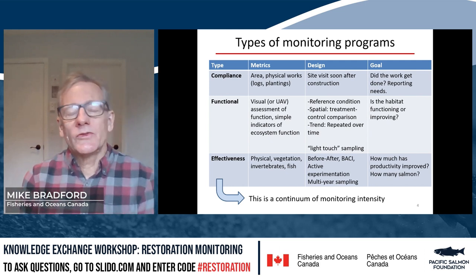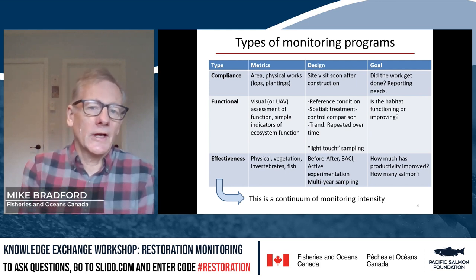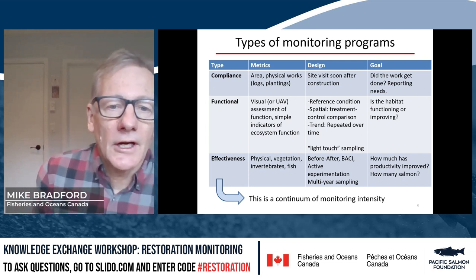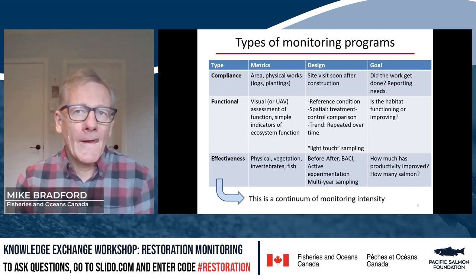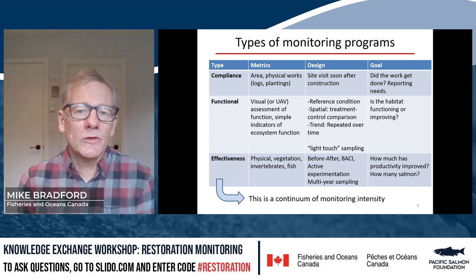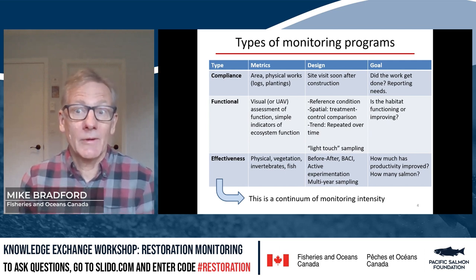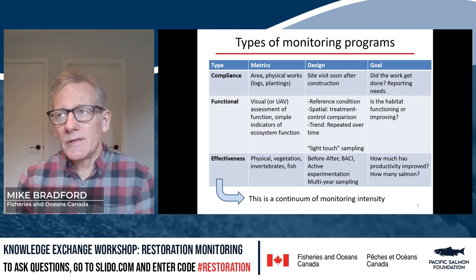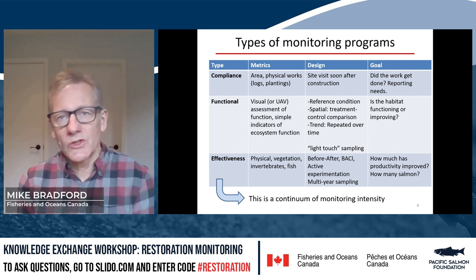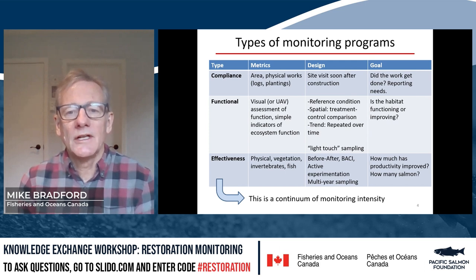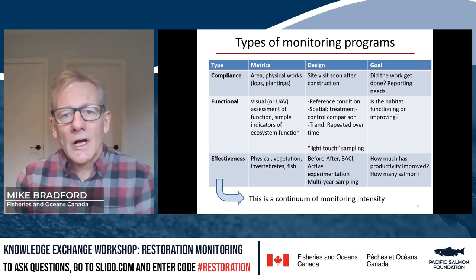The third tier is effectiveness monitoring. Here we're trying to see whether the physical and biological processes in the habitat are functioning or improving, and ultimately what that means for habitat productivity and fish — often salmon — productivity. These tend to be more detailed studies with a more formal scientific design: before-and-after comparisons, before-after-control-impact designs, multi-year and multi-site sampling. So a lot more is involved in doing these effectiveness monitoring programs.